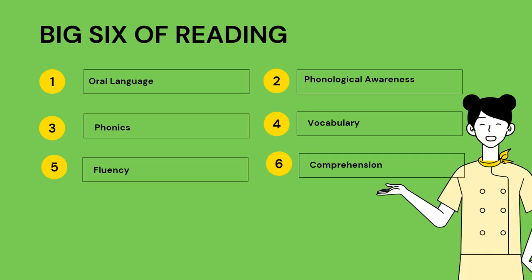Here are the big six elements of reading. We have, first, oral language, next, phonological awareness, then we have phonics, next, vocabulary, then fluency, and finally, comprehension.